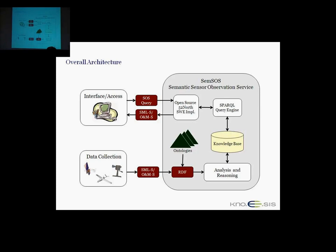Within the system, we have ontologies describing the domains we're working in, which we discussed yesterday. We have our data in RDF, and we're doing some analysis and reasoning on that data and storing it into a knowledge base. From that knowledge base, we're able to generate SPARQL queries to access it. We're using an open source SWE implementation called 52 North, and we convert the queries generated from this system into SPARQL so we can do data transformations.